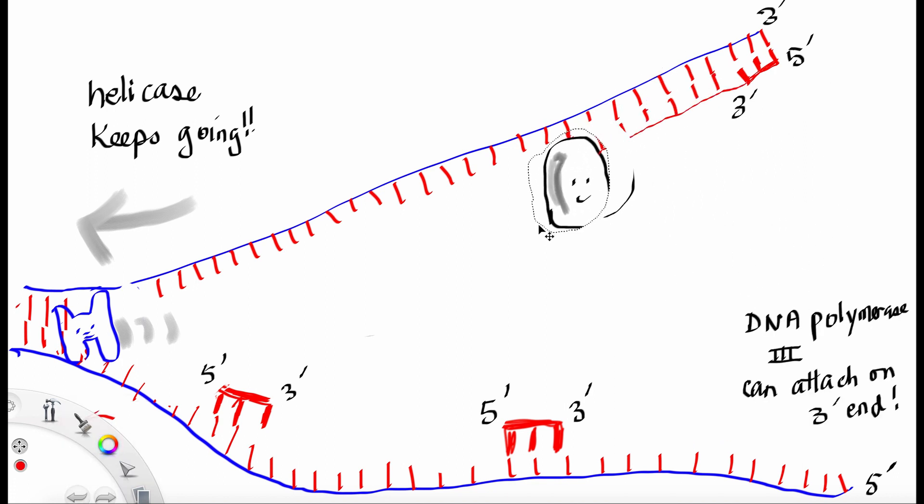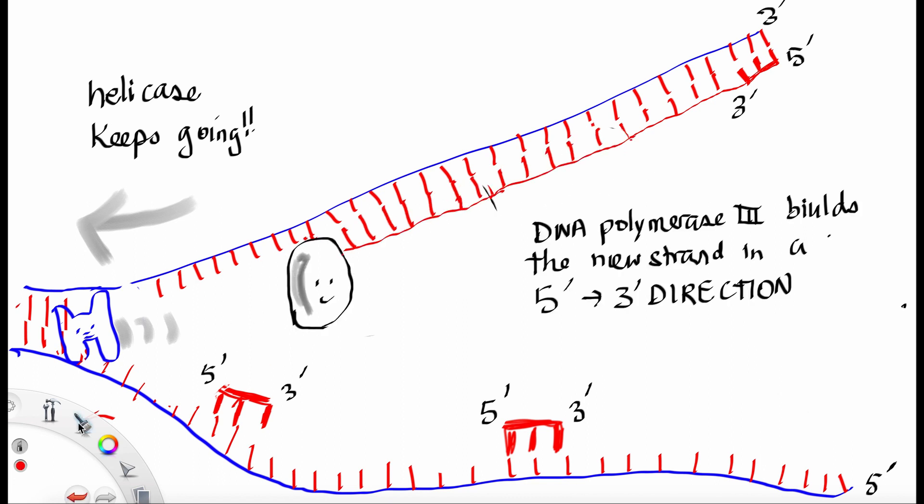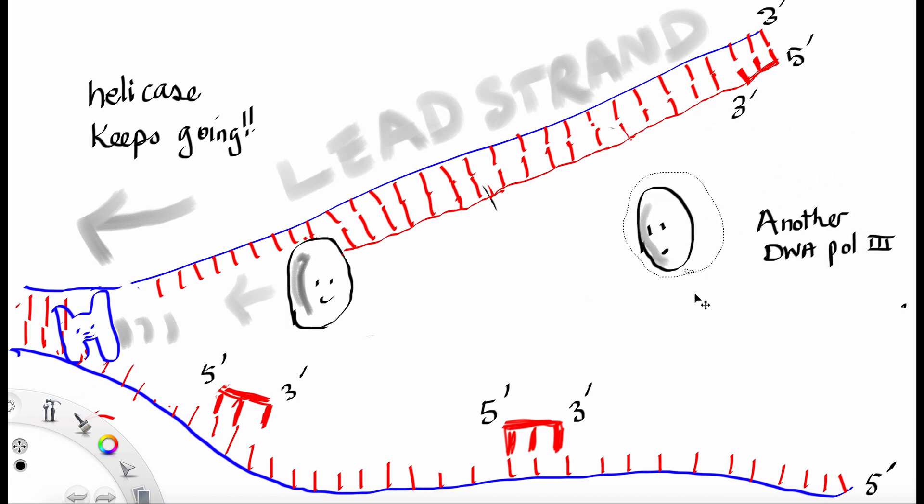DNA polymerase 3 then comes along, attaches to the 3' end, and synthesizes the new strand in the 5' to 3' direction. This polymerase 3 is following helicase. The top strand is therefore called the lead strand.